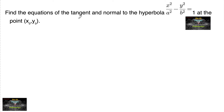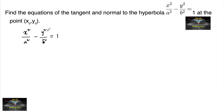Find the equations of the tangent and normal to the hyperbola x² / a² minus y² / b² = 1 at the point (x₀, y₀). So let's differentiate the curve.